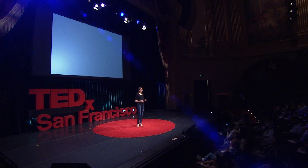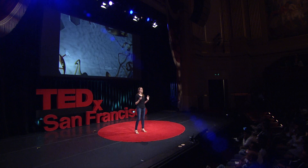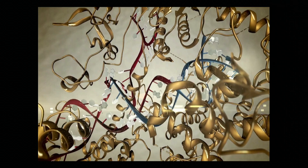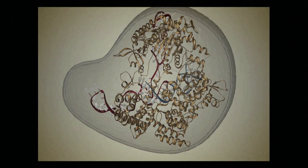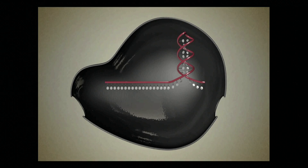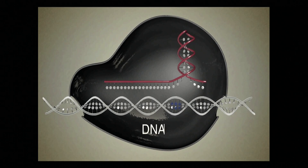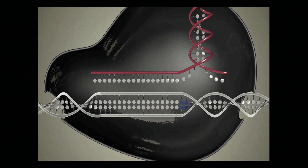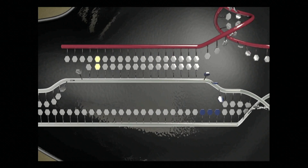A video shows how Cas9 and the guide RNA access DNA and make a cut. We start zoomed in on a 3D rendering of the Cas9 protein holding a guide RNA — in gold is the protein, and in red and blue is the guide RNA. Cas9 holds tightly onto the guide RNA, and the 20-nucleotide sequence spells out the target site. Cas9 then finds that matching site in double-stranded DNA, melts it open, base pairs with it, locks Cas9 in place, and Cas9 makes the cut.